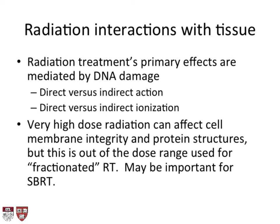Radiation interactions with tissue: the primary effects are mediated by DNA damage. Radiation has some effects on cell membranes, but at the doses we use in clinic, tissue damage is mostly mediated by DNA damage. Very high dose radiation can affect cell membrane integrity and protein structures — this might be important for SBRT or SRS — but it's really outside the dose range used for fractionated radiation.